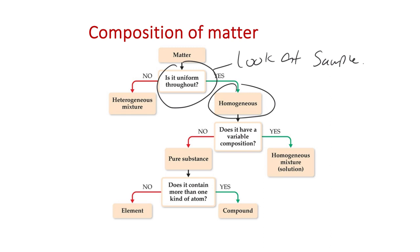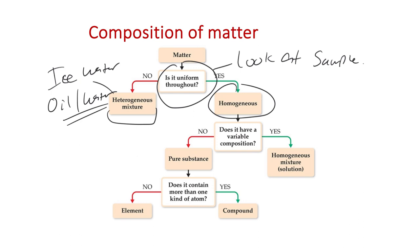An interesting example: ice water is actually a heterogeneous mixture, because ice (solid water) is a different substance from liquid water. Similarly, oil and water that have separated are a heterogeneous mixture. But if you add an emulsifier like mayo or mustard, shake it up, and the oil and water form an emulsion that looks uniform — that would appear homogeneous.